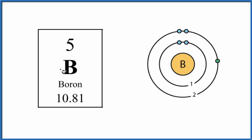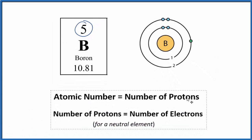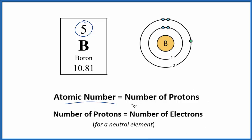So we'll start out, if we look at boron on the periodic table, this five here, that's the atomic number. And the atomic number, that's equal to the number of protons. So we have five protons in the nucleus here of the boron atom.